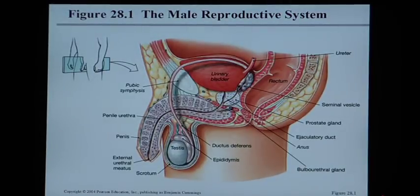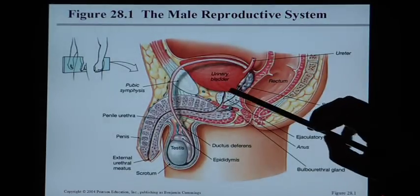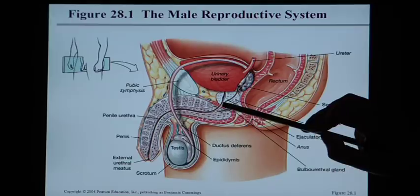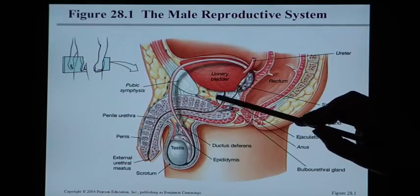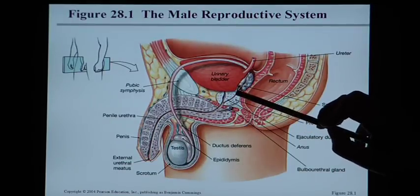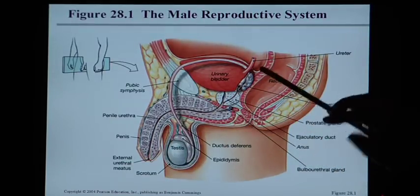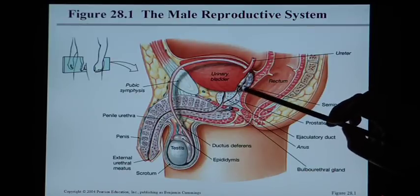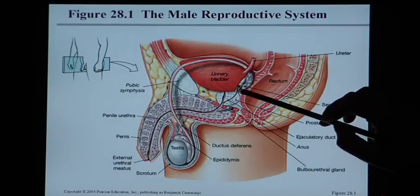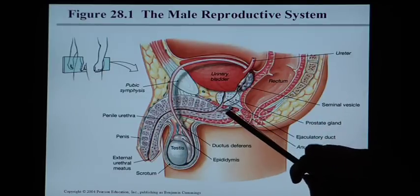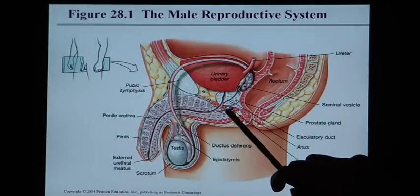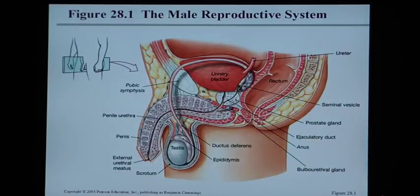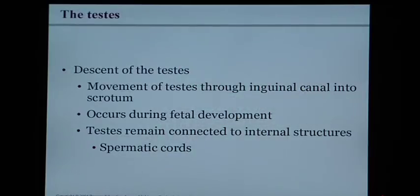The prostate gland, which we learned about in the urinary system, is right below the bladder. We have the seminal vesicles — two of them — on the back of the bladder, and the bulbourethral gland located below the prostate. Those are the three accessory glands.